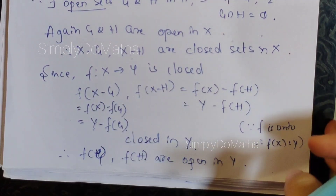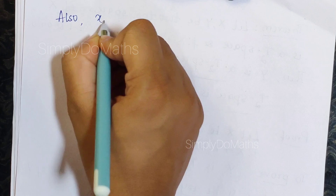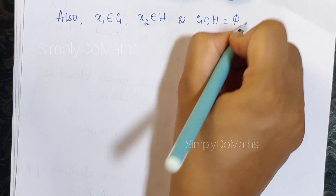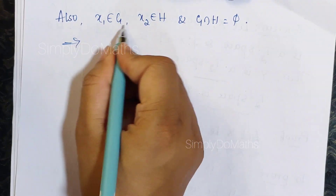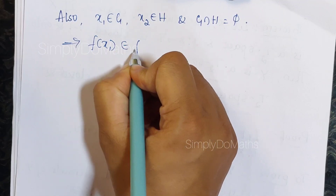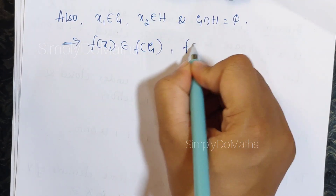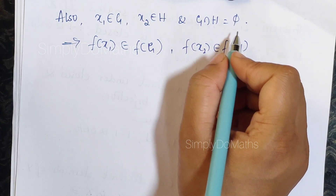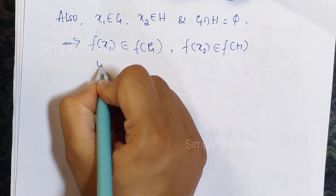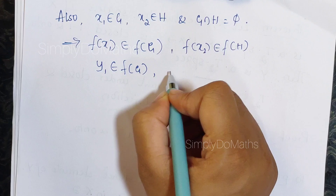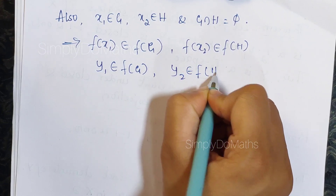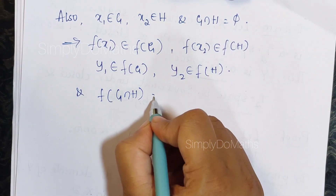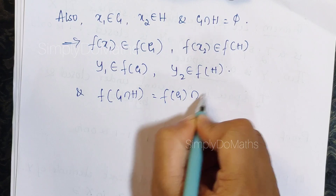Now let's combine all these results. Since x1 belongs to G, we have f(x1) belongs to f(G). Since x2 belongs to H, we have f(x2) belongs to f(H). Since f(x1) = y1, we get y1 belongs to f(G). Since f(x2) = y2, we get y2 belongs to f(H).